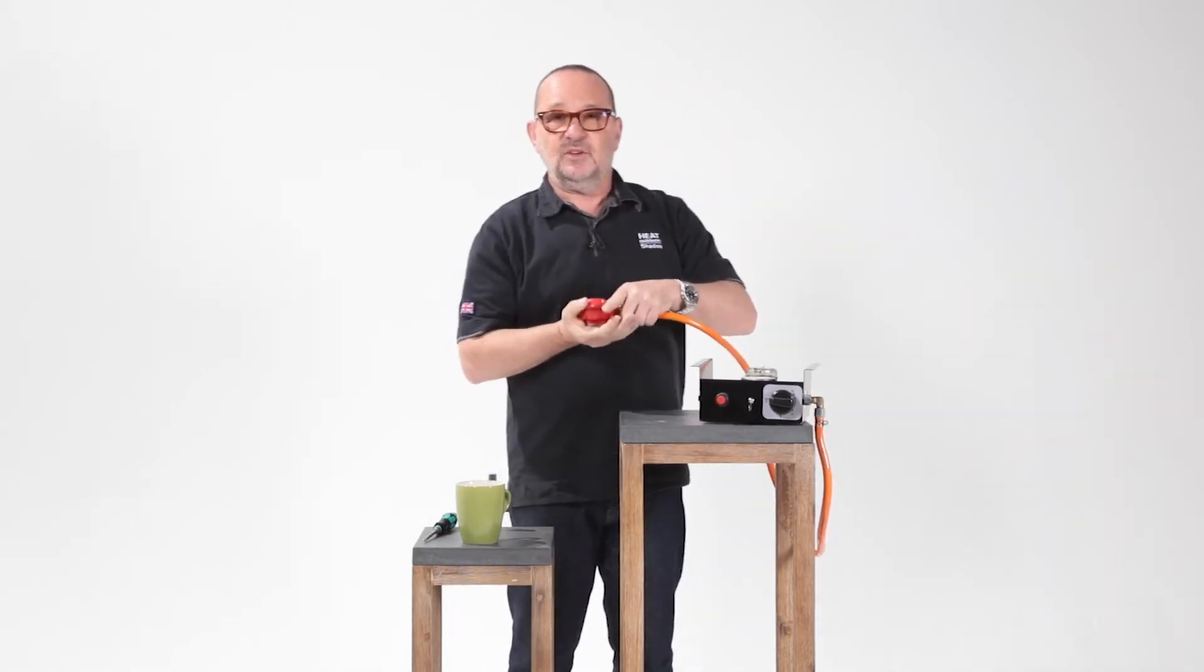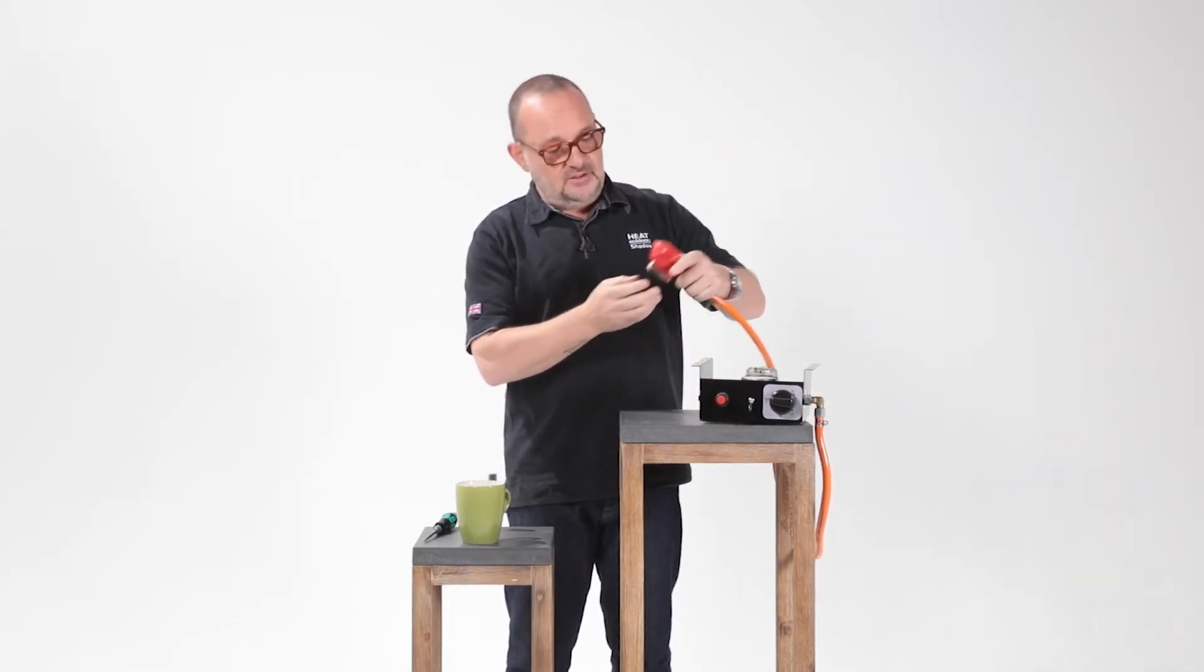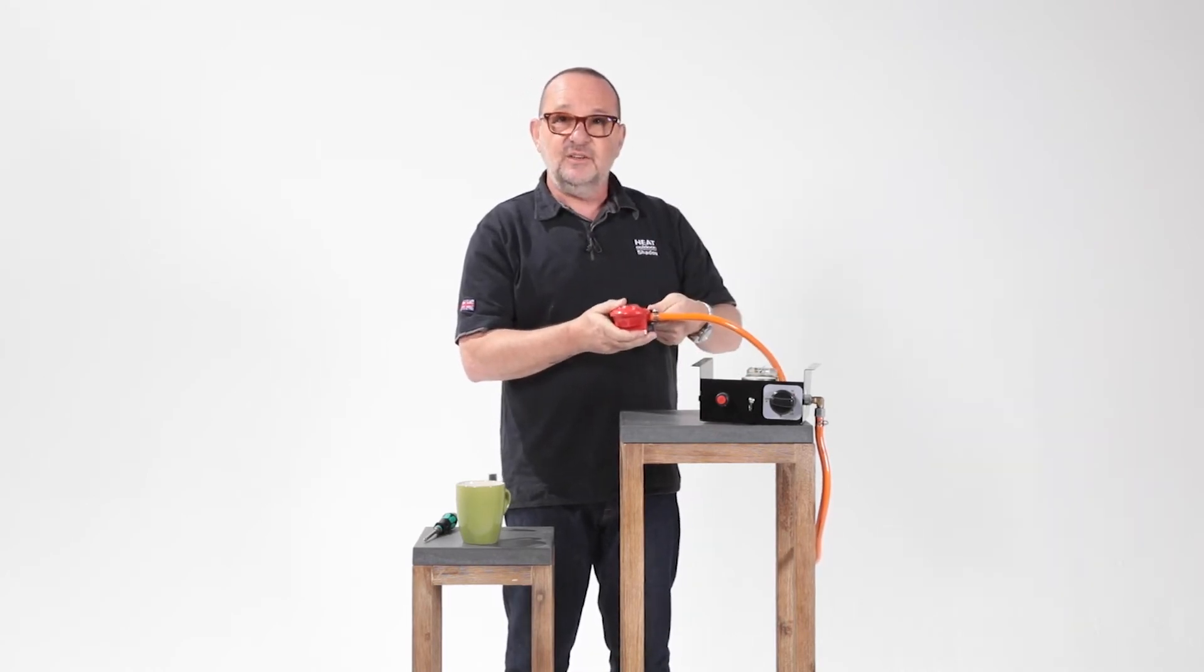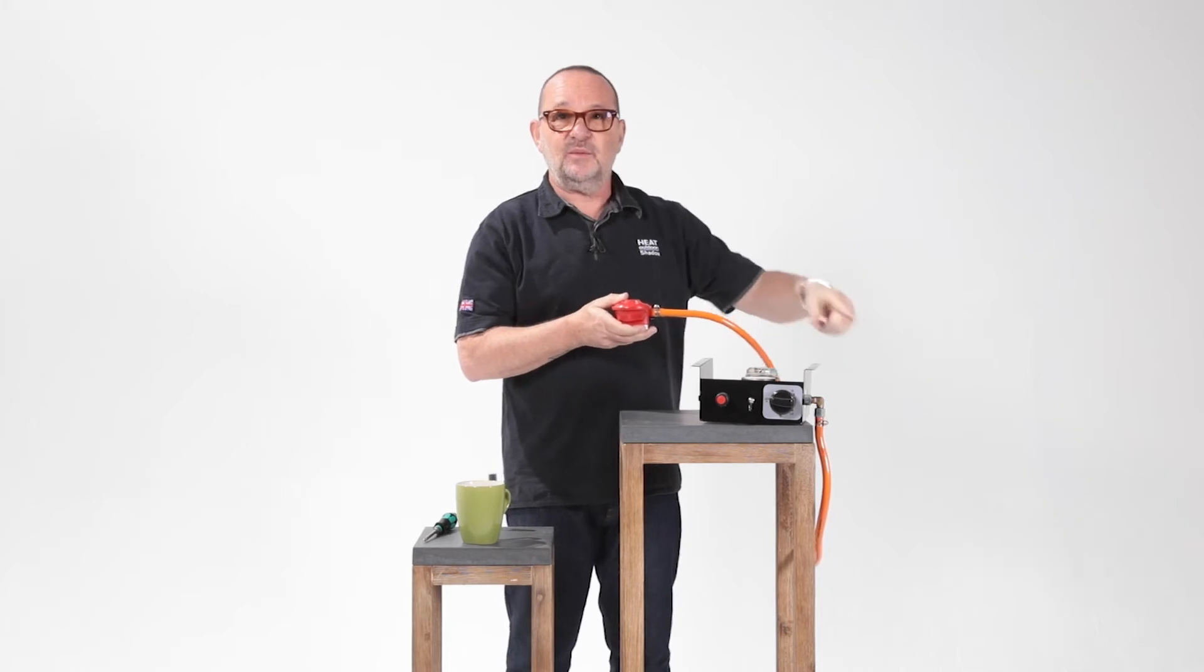What you'll do is connect it up to the gas bottle. This one is a clip-on regulator, so that'll pop on. Turn the gas on and that's then allowed gas all the way up the pipe under pressure.